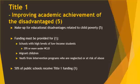No Child Left Behind is broken up into 10 separate titles. I'll go over titles 1 and 2, but the rest you can read on your own. With title 1, No Child Left Behind looks to improve academic achievement of the disadvantaged as it relates to child poverty. It dictates that added funding must be provided for schools with 35% or more low-income students, also migrant students, and youth from intervention programs who are neglected or at risk of abuse. Currently, 50% of all public schools receive title 1 funding.